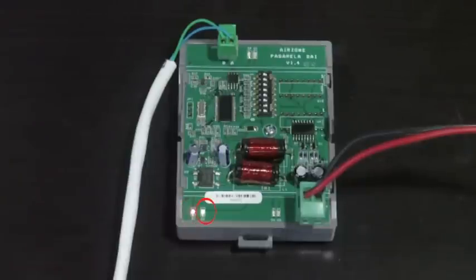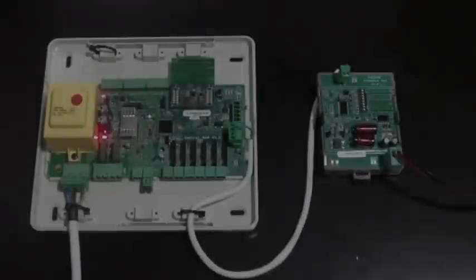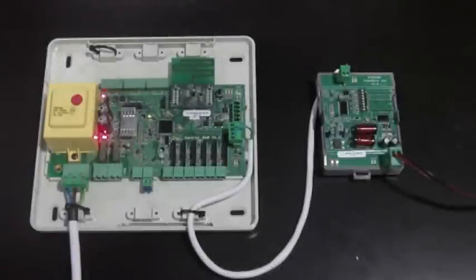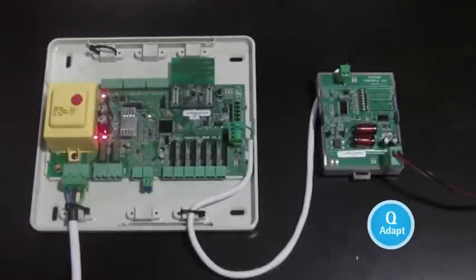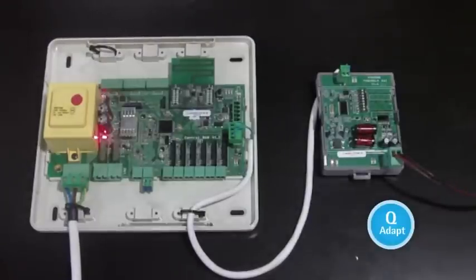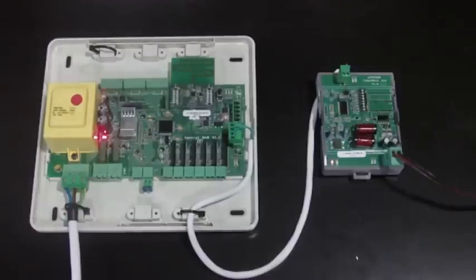In the case of having the communication gateway connected to an Airzone Flexa 2.0 or Easyzone system, you can also configure the indoor unit fan speed selection map thanks to the Qadapt function, so that the integration is best fitted to the real installation.